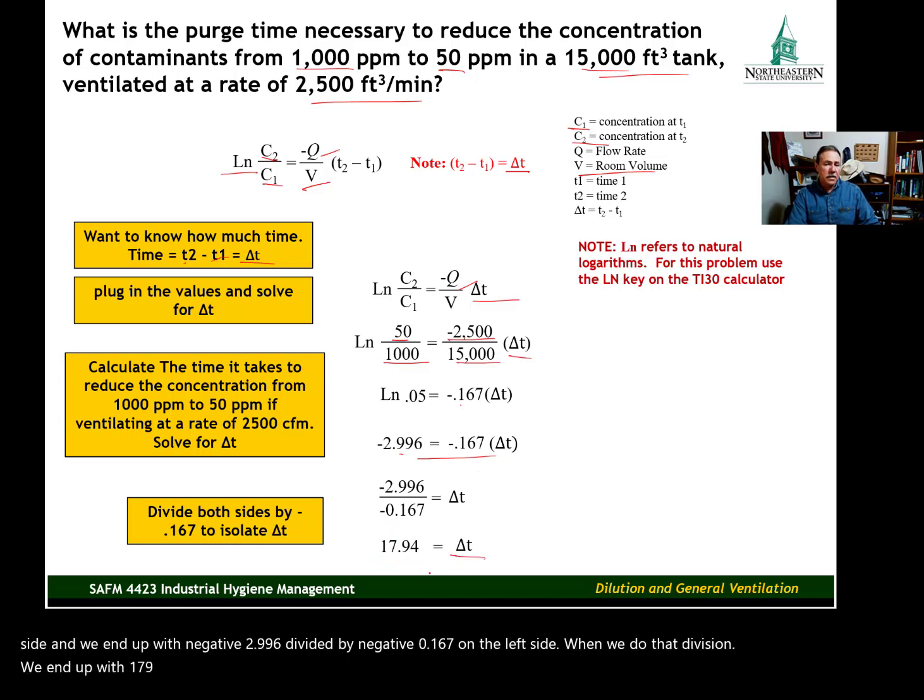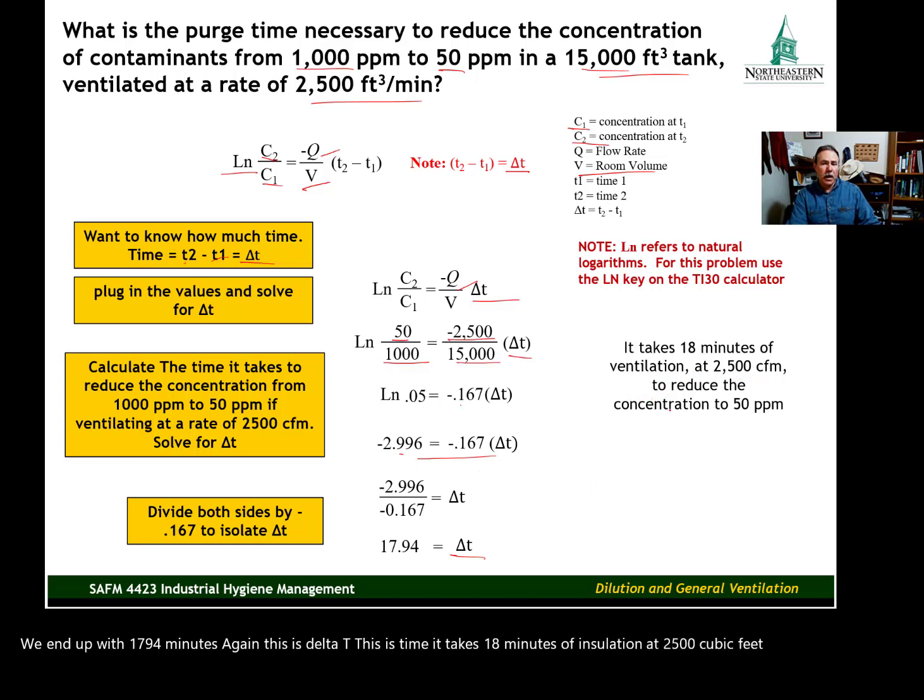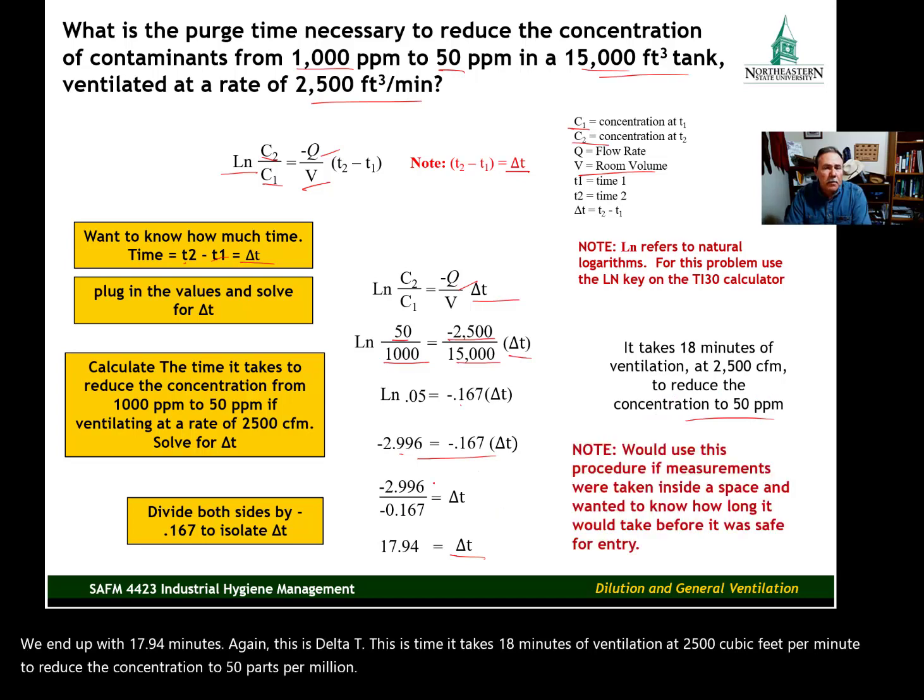Again, this is delta T. This is time. It takes 18 minutes of ventilation at 2,500 cubic feet per minute to reduce the concentration to 50 parts per million. If you have any questions, let me know and we'll get those questions answered. I'll see you in the next video.